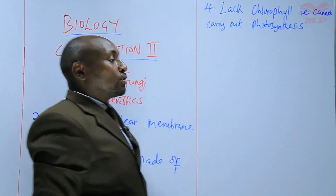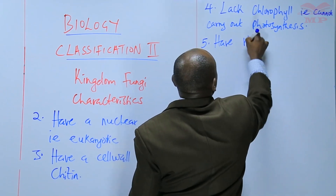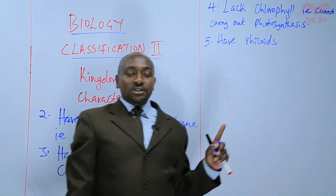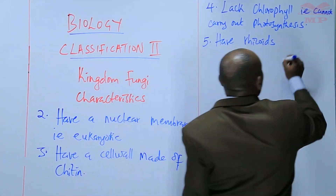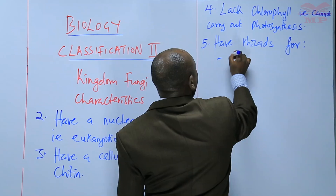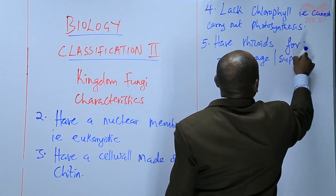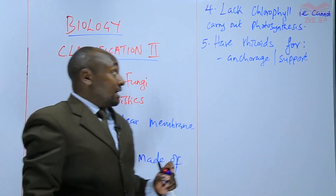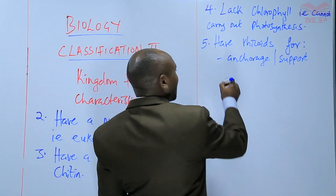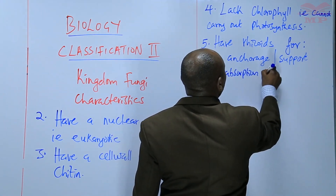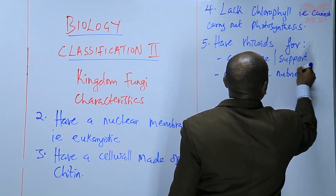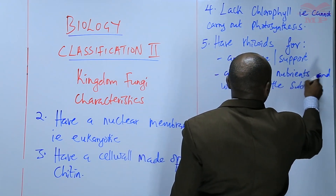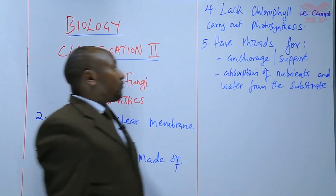Another characteristic of kingdom fungi is that they have rhizoids. Rhizoids resemble roots, like the roots of plants, but we call them rhizoids. They have rhizoids for two purposes: first, anchorage — that is support — so that they can support themselves onto the substrate they are growing on. Second, rhizoids also help in absorption of nutrients and water from the substrate.